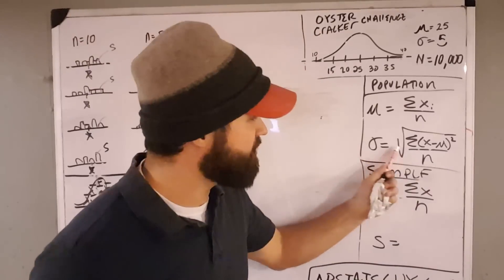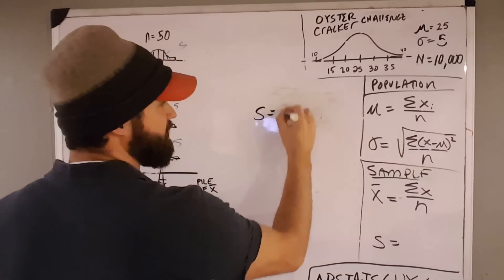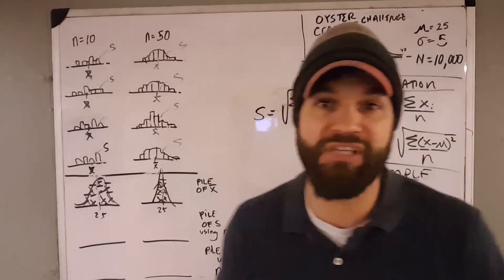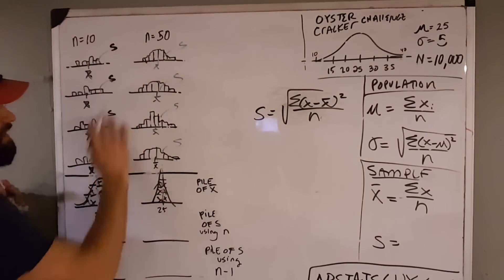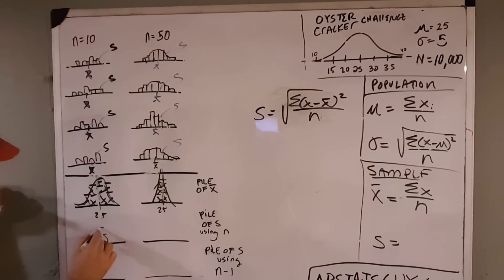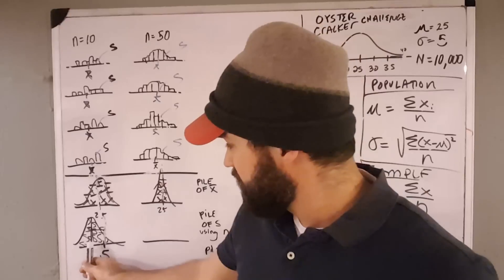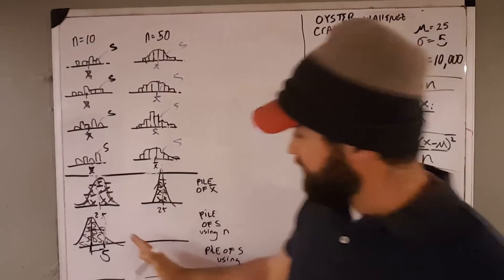Now let's see if I can take the population standard deviation formula and use that for my sample standard deviation. Suppose I'm using the same formula: I take each individual minus the average of the sample, square it, and divide by n. I want to see if it's a good estimate of the population. I take this sample, get an s from this sample, an s from this sample — all these sample standard deviations — and put them in a pile. Let's see if they're centered around the true standard deviation of 5. What's happening? I end up getting a bunch of s's that are less than 5, quite a bit less. There's a big gap between the middle of my pile and where it should be. I want to slide this up so it's an unbiased estimator. When I use that formula exactly, I end up getting something that's a little bit less.